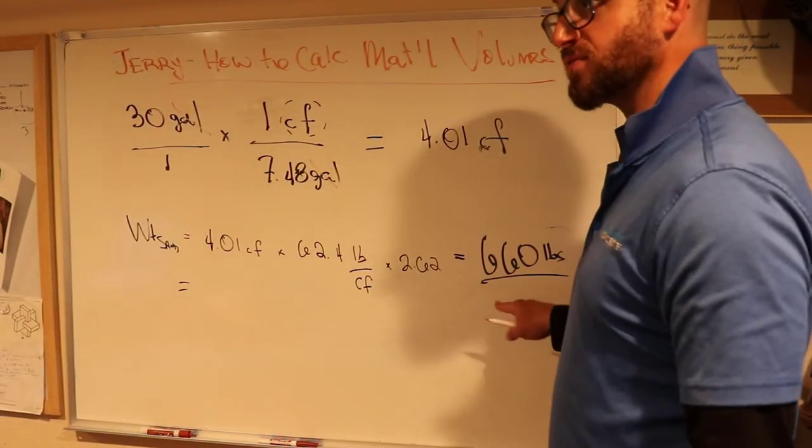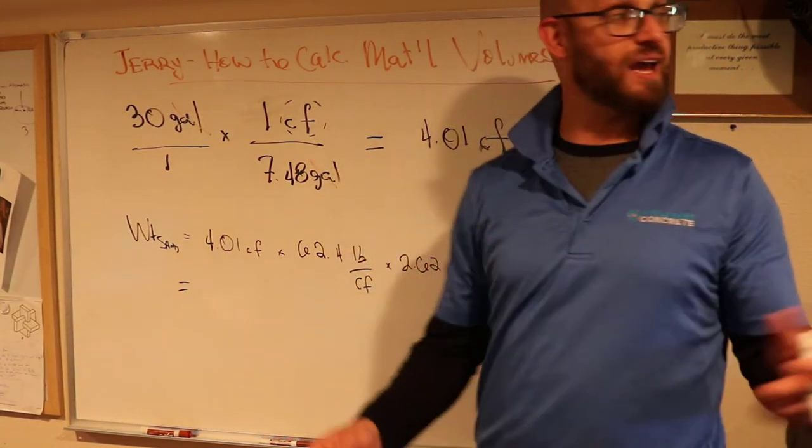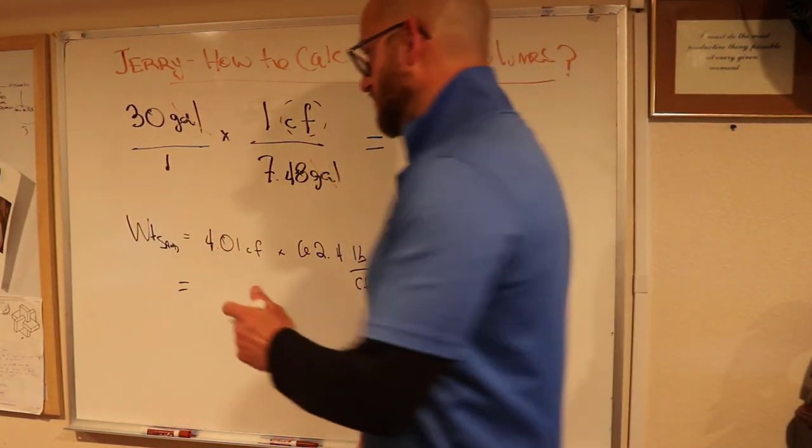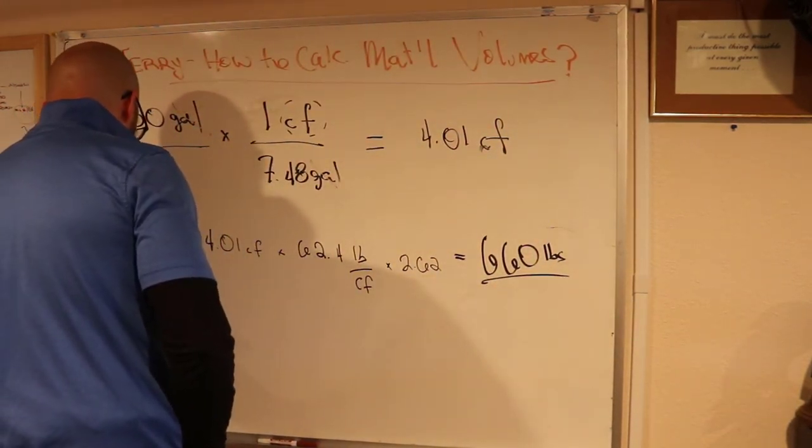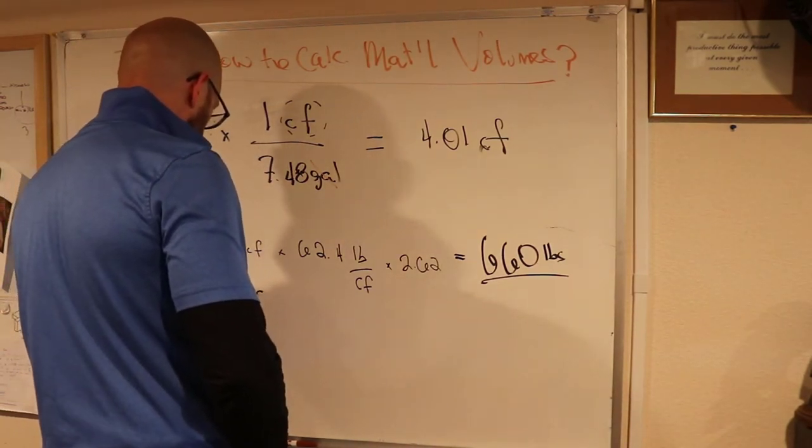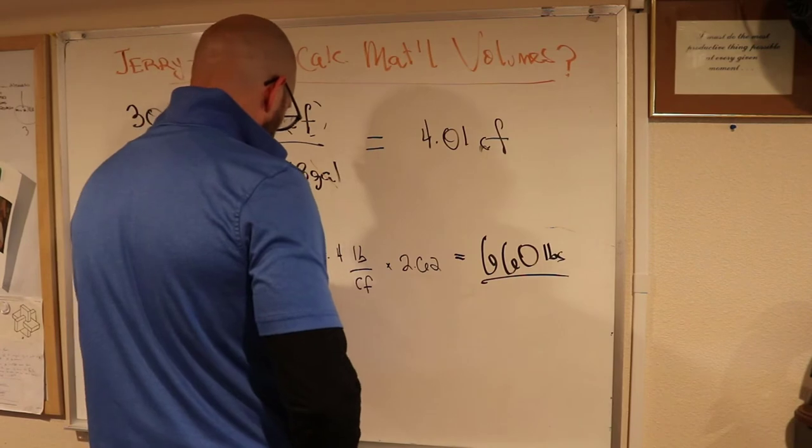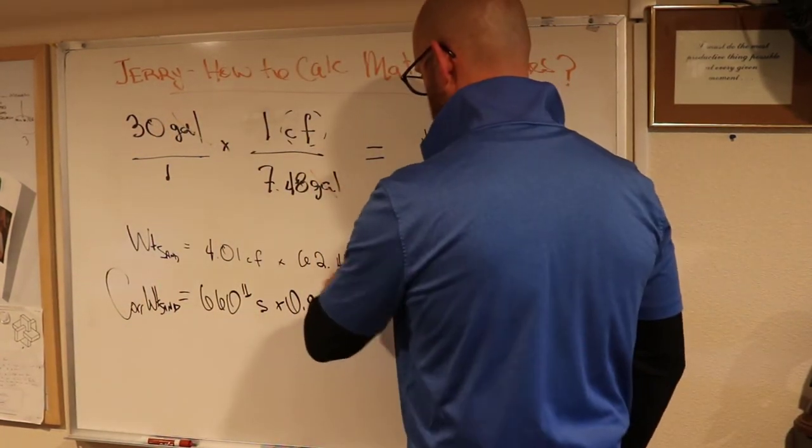So we have, for every one of those 30 gallon pails, around 660 pounds of sand. But we want to throw a correction factor on that, a holy shit factor. So the corrected weight of sand, we're going to multiply that 660 pounds times 0.85 equals 561, 560 pounds.